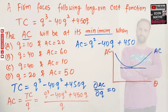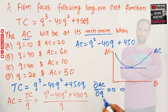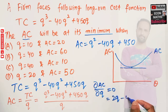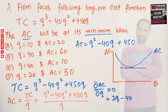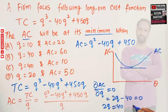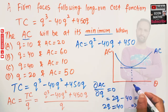Setting the derivative of the average cost function with respect to output equal to zero: the derivative of Q squared is 2Q, minus 40 (derivative of 40Q is 40), and the derivative of the constant 450 is zero. So 2Q minus 40 equals zero, which gives 2Q equals 40, therefore Q equals 20. Output is 20.